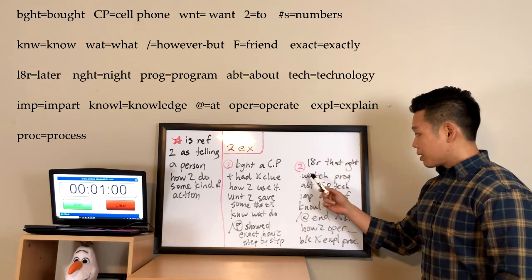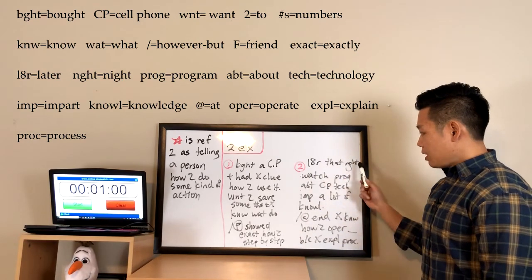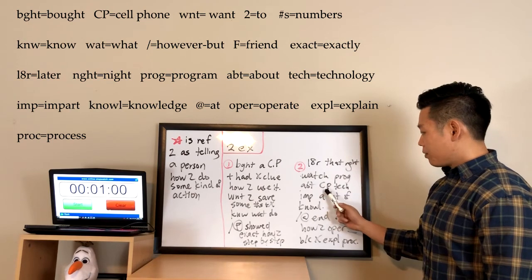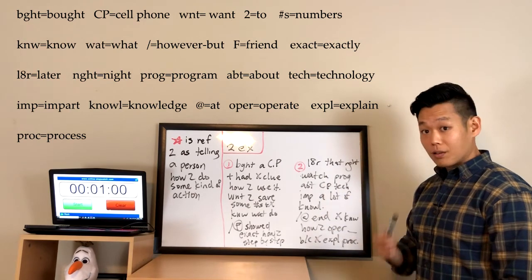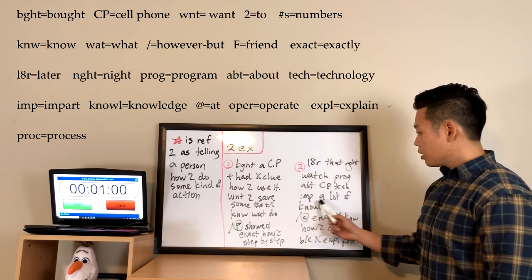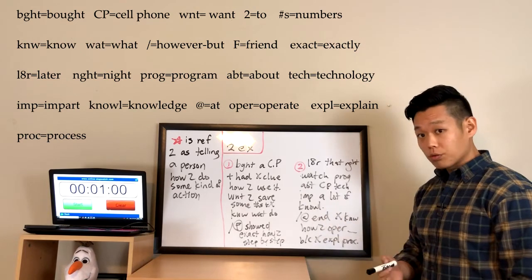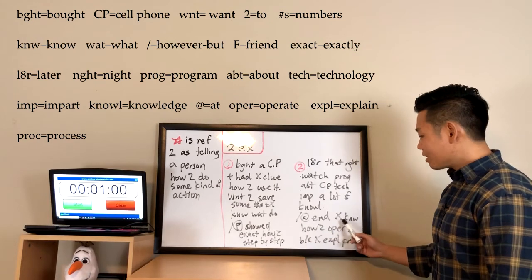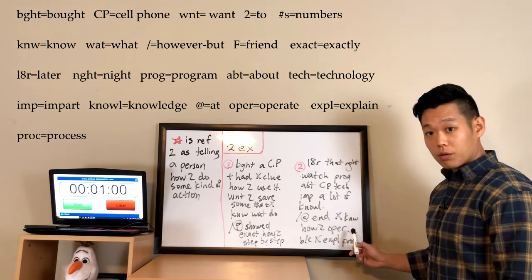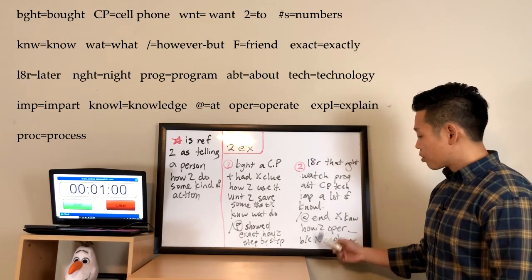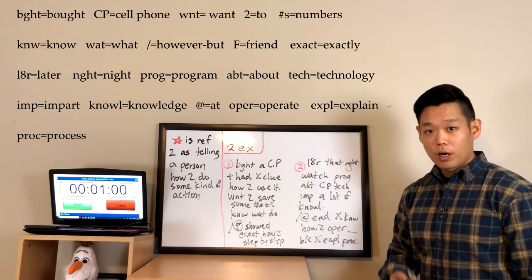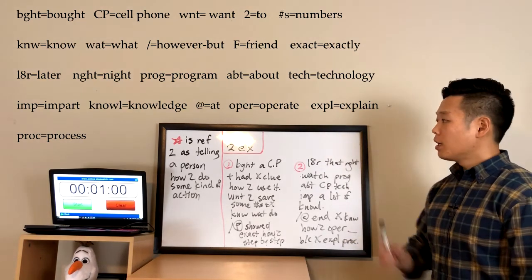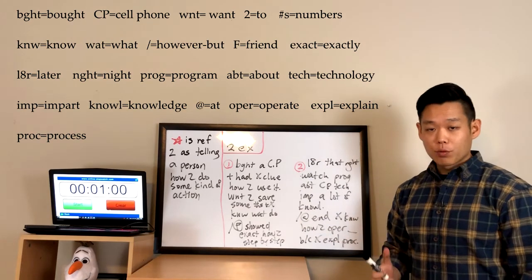For the second example: later that night, the professor watched a program about cell phone technology, which imparted a lot of knowledge about cell phones. However, at the end of the show he still did not know how to operate his cell phone simply because the program never explained the process of doing so.